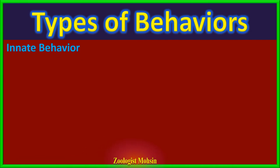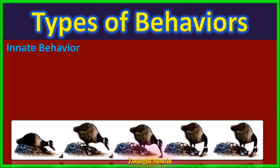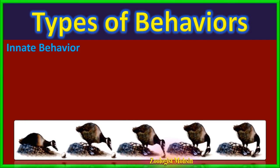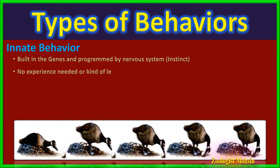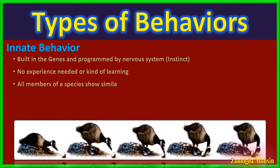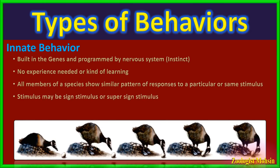Let's start from innate or instinctive behavior. The word innate or instinct means already built into DNA or genes. Information stored in genes is processed and programmed by the nervous system to produce certain fixed responses. The main difference between innate and learned behavior is experience — in innate behavior, no experience is required to produce responses. All members of the same species show the same responses to the same stimulus at all times.